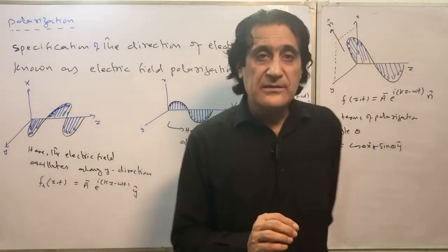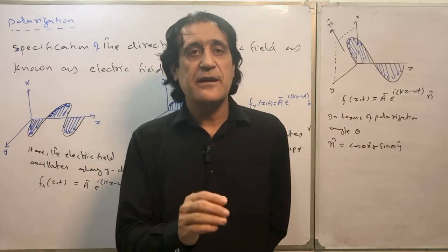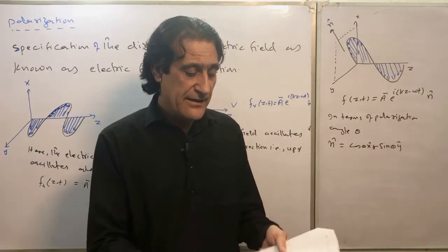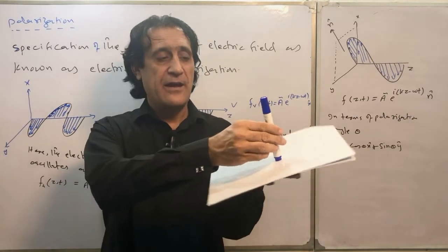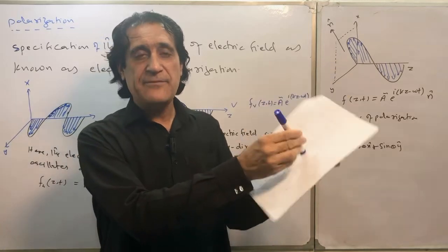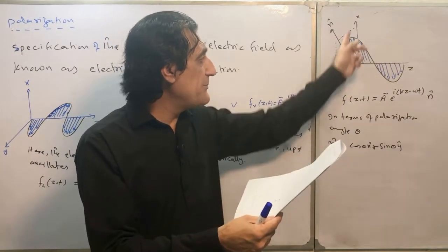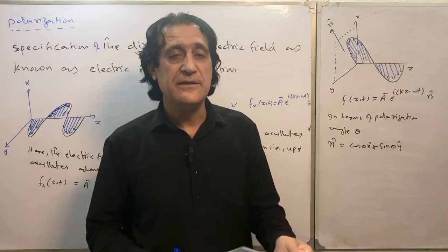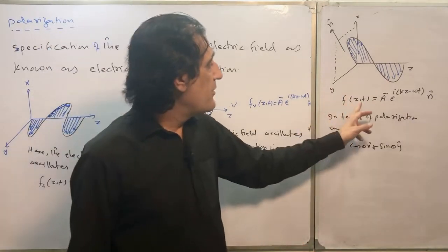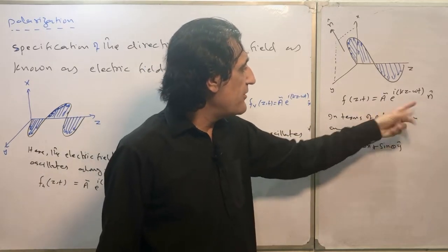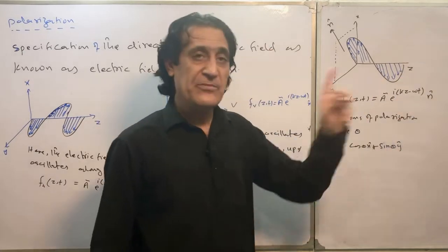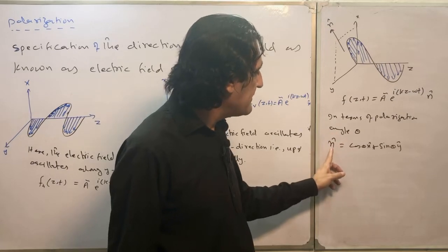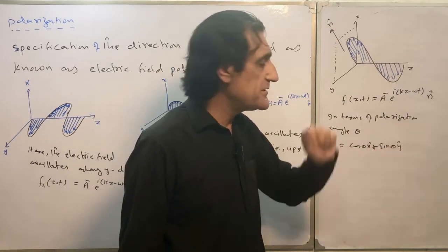It is also possible that the electric field is oscillating along a plane. For example, if we have the x-y plane, the electric field can oscillate in that plane. We represent the direction as n̂, which is the direction of the surface, in terms of the polarization angle: n̂ = cos θ x̂ + sin θ ŷ.